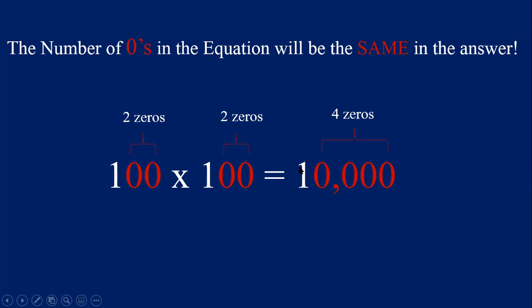Place value becomes very important when we start working with large numbers. It's important to count over three place values and put in that comma so you can read the number correctly. Remember, each digit in a number has a place value, and if you know the correct place value, you'll be able to quickly say the answer out loud. With mental math, we want to be able to say the answer quickly, so we need to know place value to say these numbers correctly.